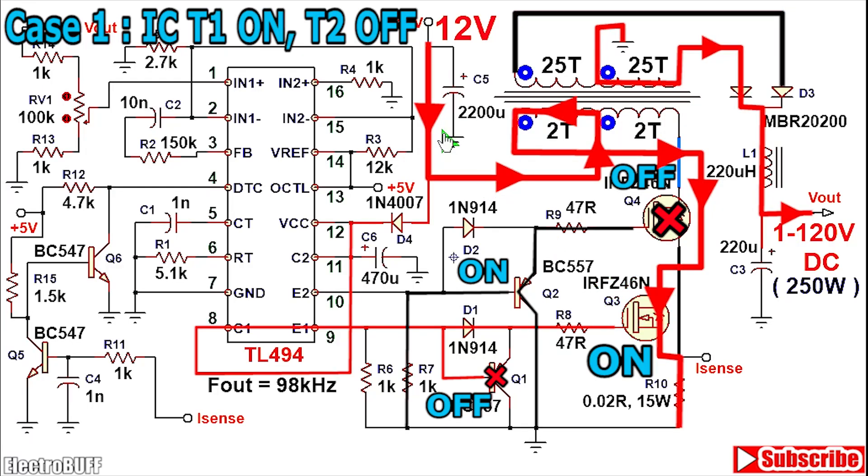When Q3 conducts, now you have a current path flowing from the input positive supply of 12V, through the left-hand side of the primary winding, through the MOSFET Q3, through the current sensing resistor R10 and the negative rail or ground. This is the first half cycle.